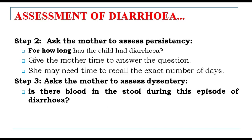Step 2: Ask the mother to assess persistence — for how long has the child had diarrhea? Give the mother time to answer; she may need time to recall the exact number of days. Step 3: Assess dysentery — ask if there is blood in the stool during these episodes of diarrhea.